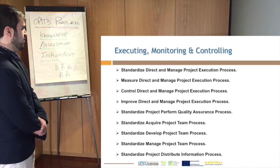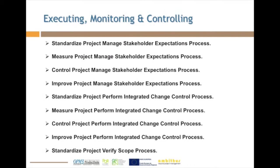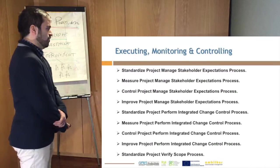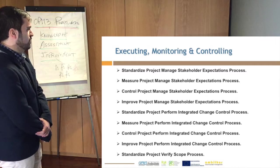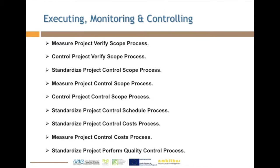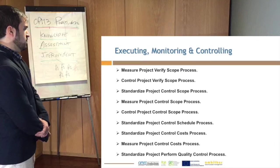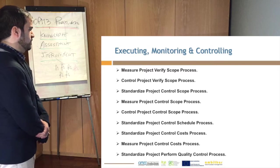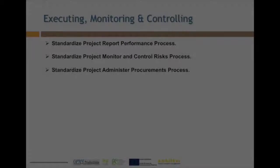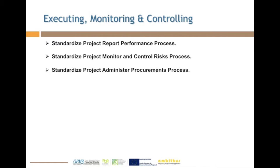We also recommend to standardize the distribution of information. For the manage stakeholder expectations process, we recommend the full cycle: standardize, measure, control, and improve. For integrated change control, also the full cycle — standardization, measure, control, and improve. Then the verification of scope should be implemented with standardization, measure, and control. For control of scope, also the full cycle. To control the schedule process, we recommend to standardize. The project control cost process should standardize and measure. Quality control process should standardize. For report performance, monitor and control risk processes, as well as the project procurements process, we recommend standardization.